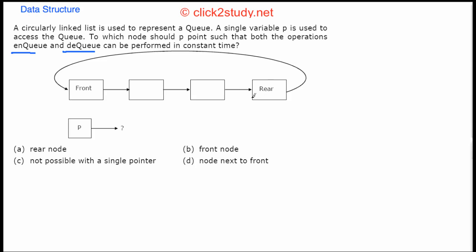Rear is the next available space in the queue. Enqueue is when you insert a new entry — it goes right after rear. You create a new node, point it to rear, and adjust the links. Dequeue removes the front entry: the next node becomes front and the list is re-linked accordingly.